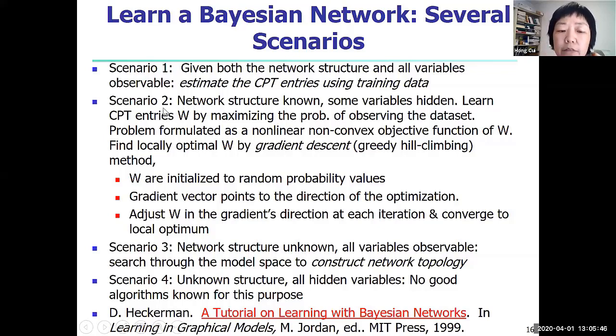Scenario two: we have the network structure known, which means we know all the nodes and how those nodes connect to each other. However, some variables are hidden. This means we don't have observation data for those variables, or much of that data is missing. Some variables are observed, others are hidden. So in this case, one of the methods that's being used is to use gradient descent.